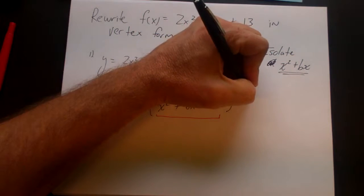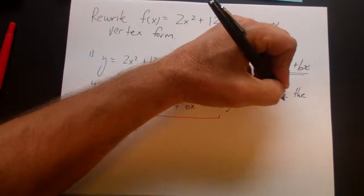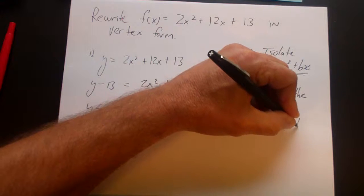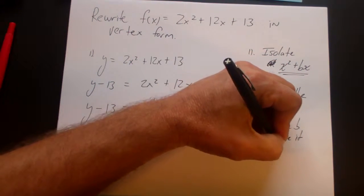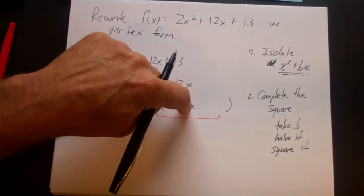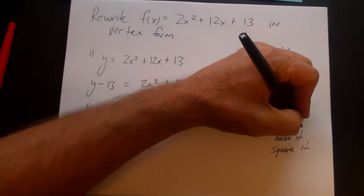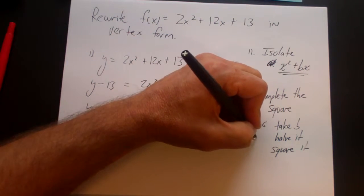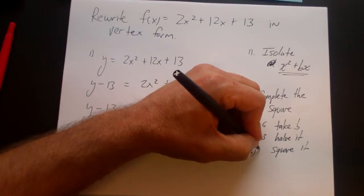So the next step is I'm going to complete the square, and the way that we complete the square is we take b, half it, and square it. So in this case, b is 6, half of 6 is 3, and 3 squared is 9. So b is 6, half it is 3, and when we square that we get 9.